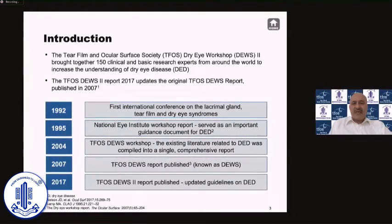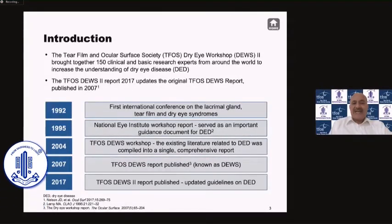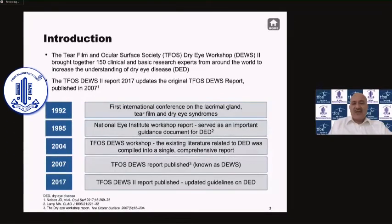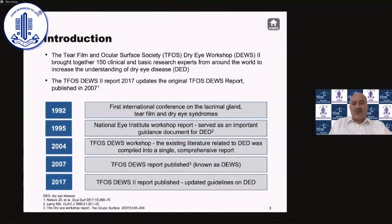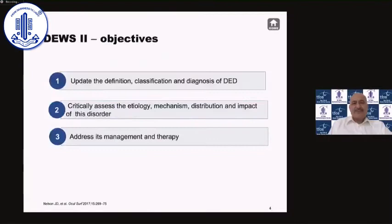A brief history: the first international conference on lacrimal gland, tear film, and dry eye syndrome was organized in 1992. In 1995 there was the first NEI report — these are all landmark reports which laid down the guidelines and basis for research and treatment plans. DEWS I was constituted in 2004 and the first report came in 2007, followed by the DEWS II reports in 2017.